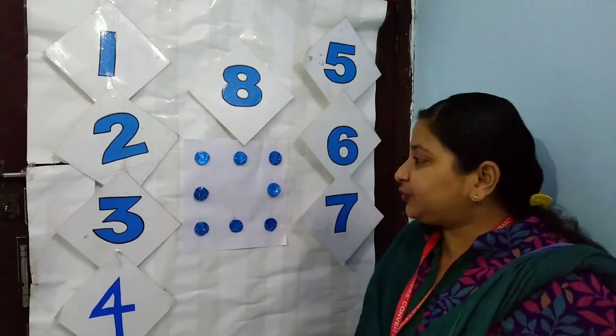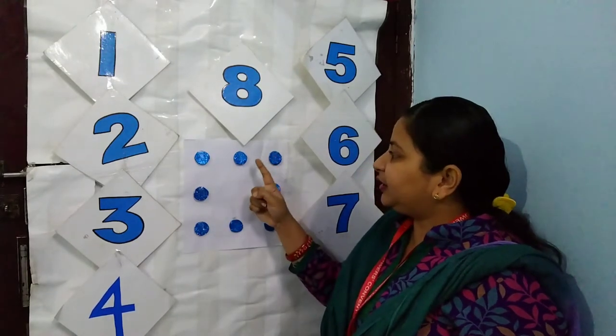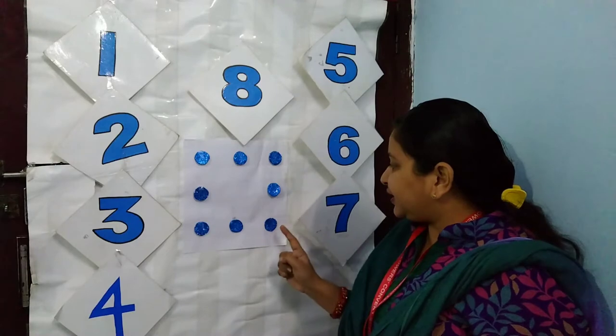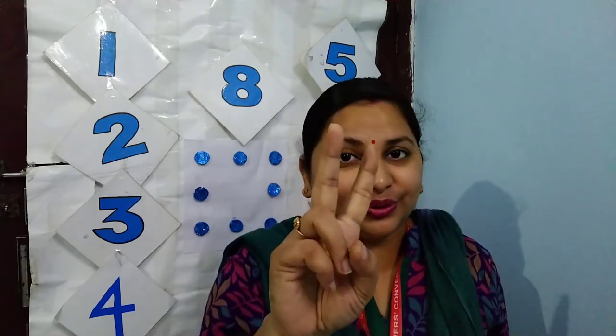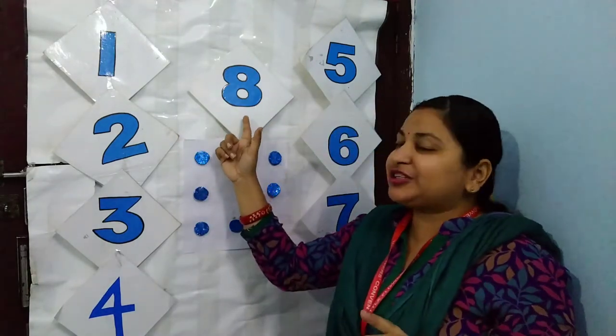Okay children, once again count with me. One circle, two circle, three circle, four circle, five circle, six circle, seven circle, and eight circle. How many fingers I will show to you? This is our eight fingers. And which number is this? This is number eight.